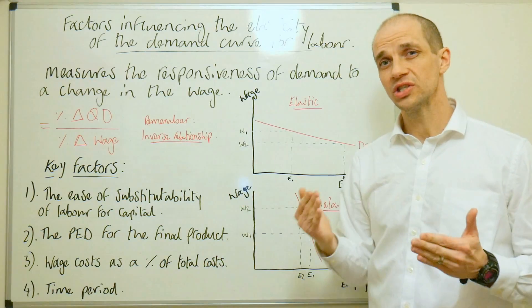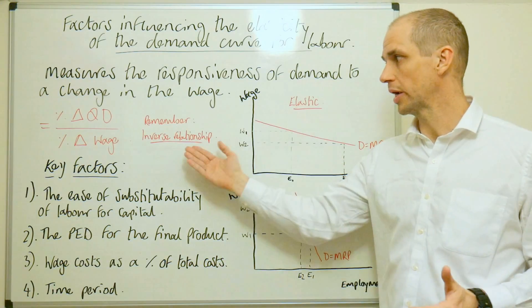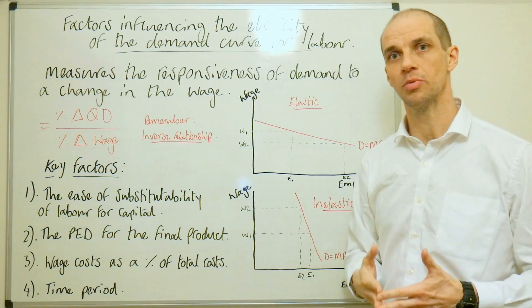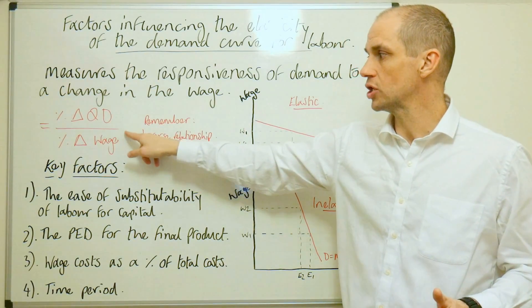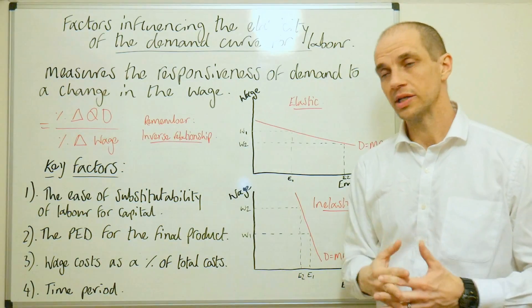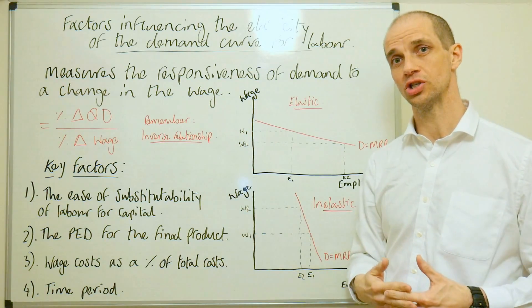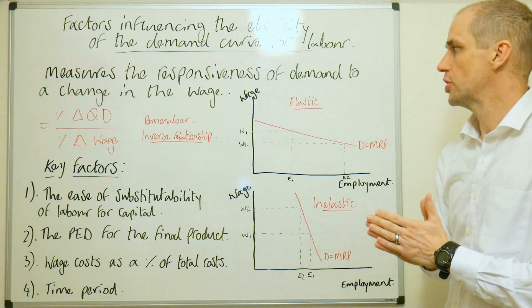Now just remember we've seen that there is an inverse relationship between price or the wage rate and the quantity demanded. So that means if the wage increases, the quantity demanded will decrease of course and vice versa. So there's always a negative relationship there, so that's important to note.